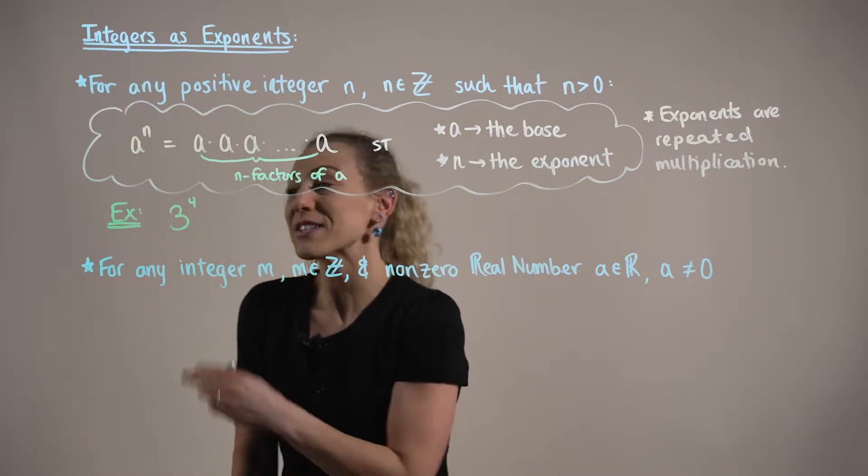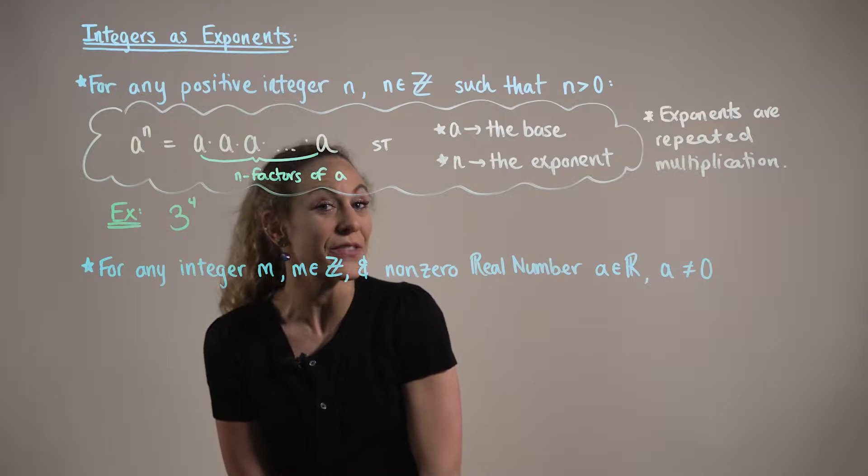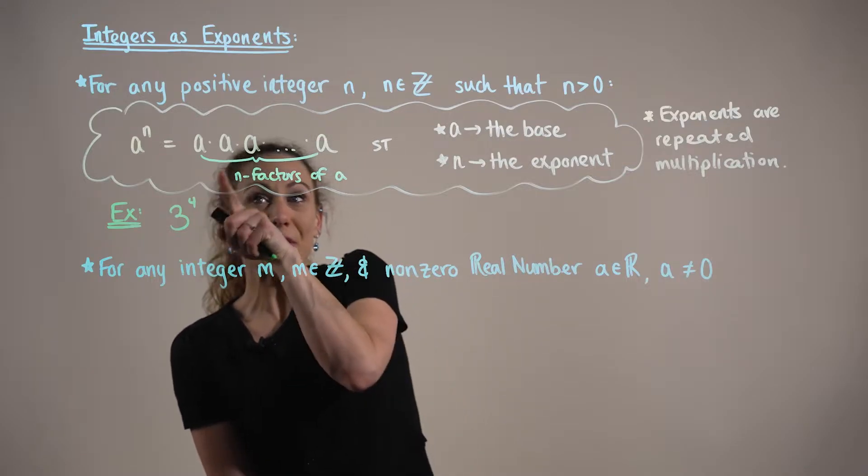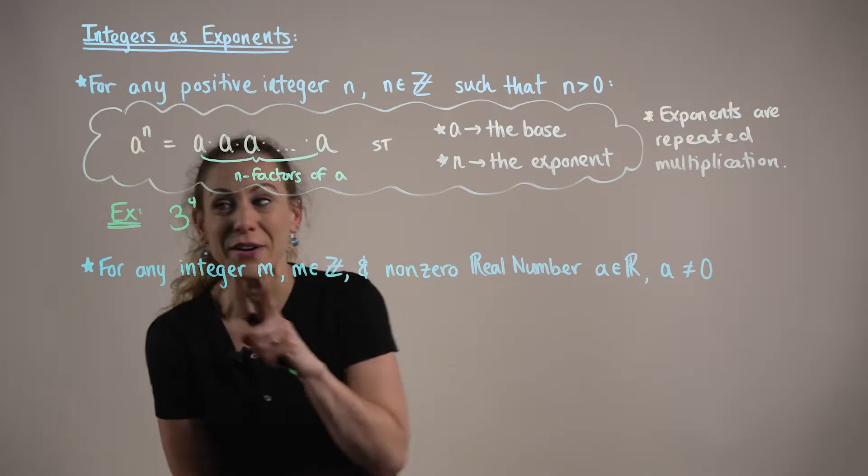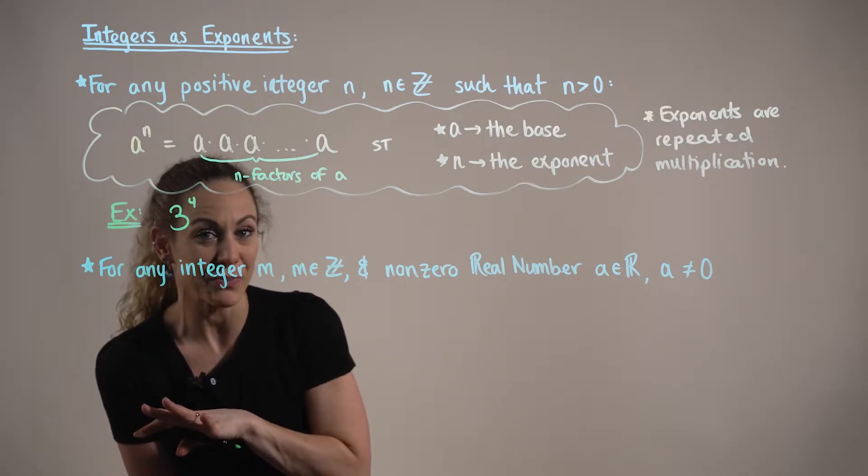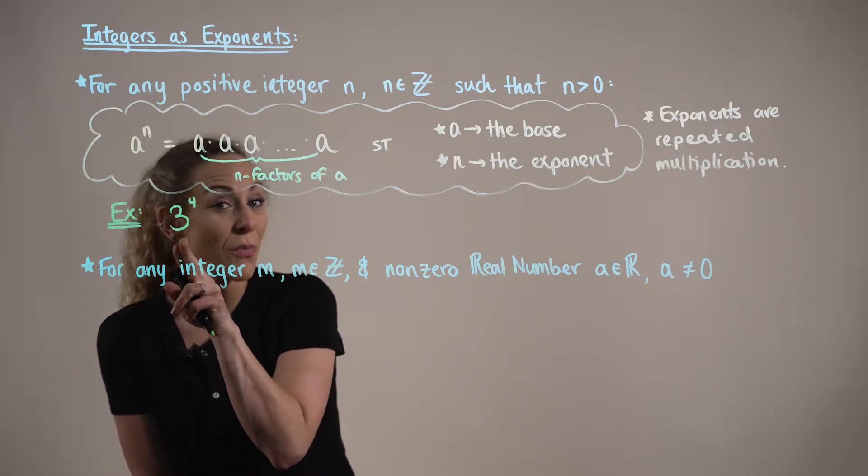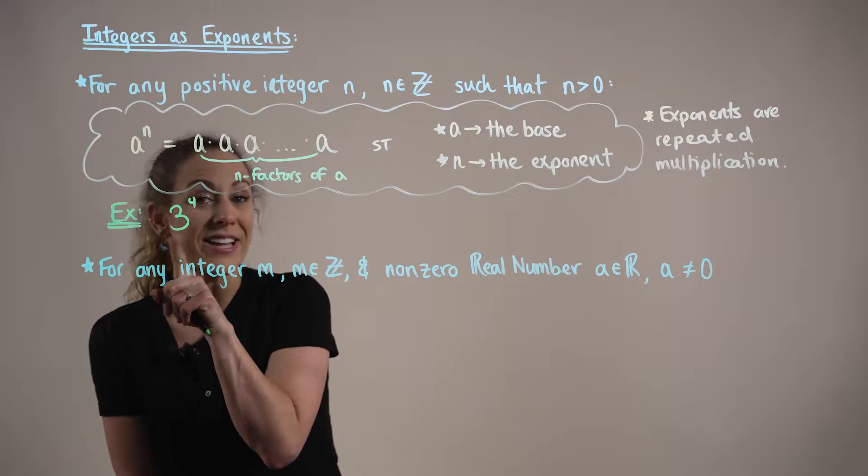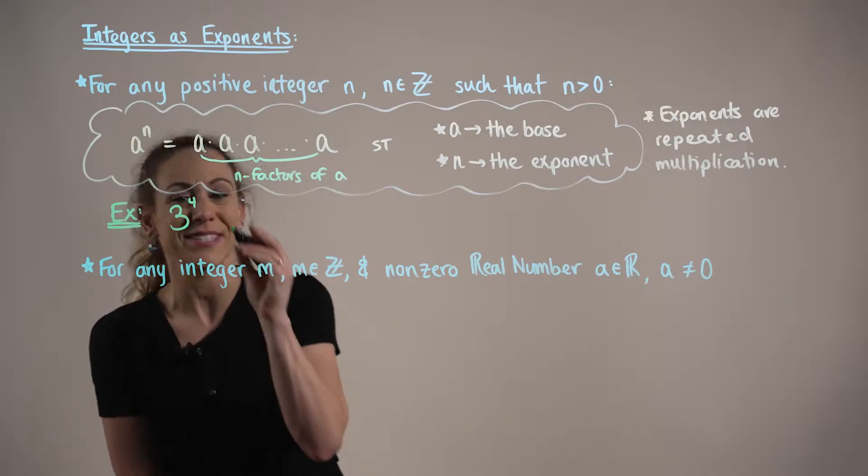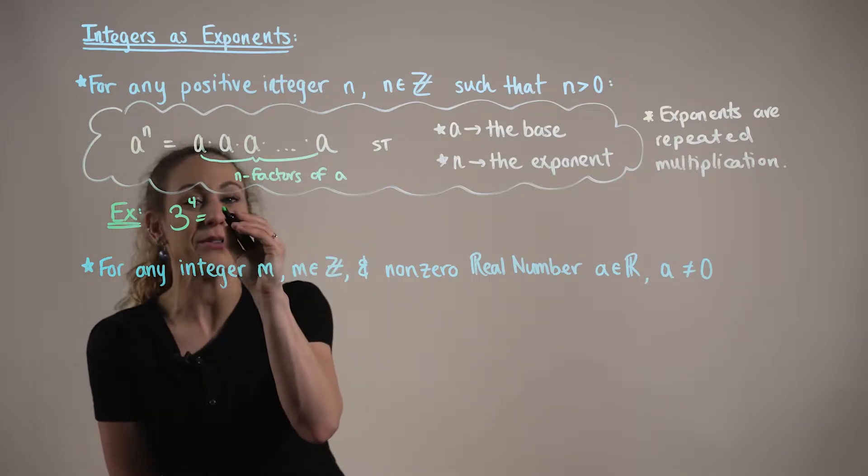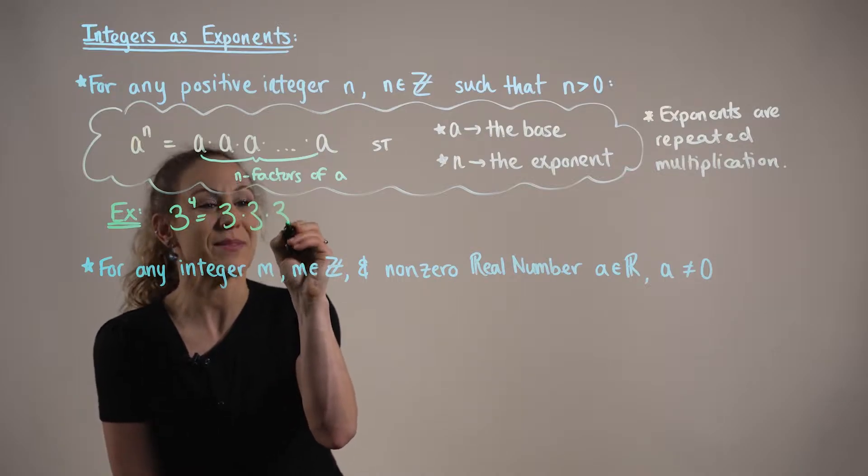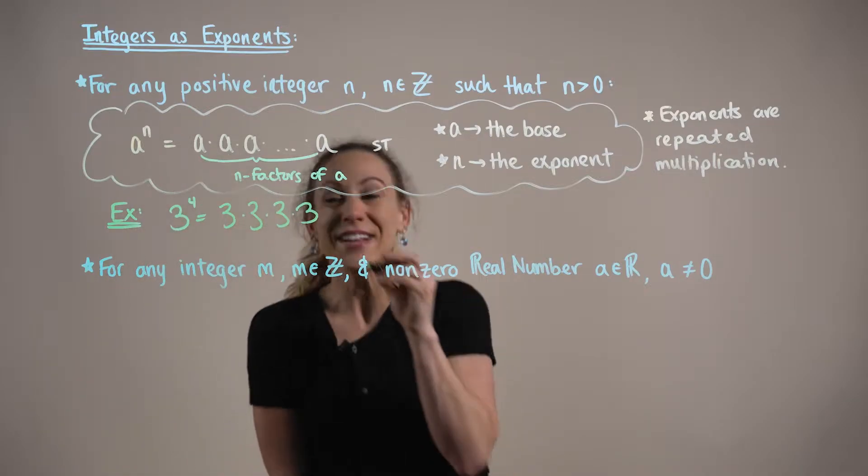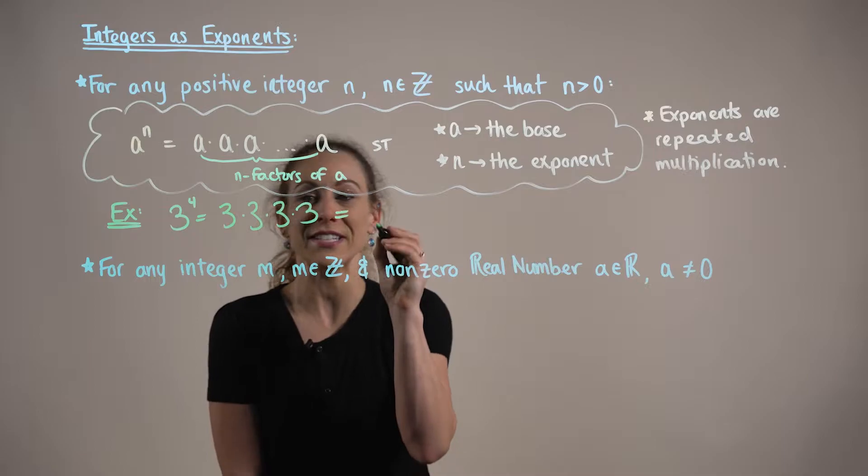Suppose we're asked to evaluate the expression three to the fourth. Thinking back to our definition, this is asking us to multiply the number three together four times. We can expand this out to three times three times three times three, leaving us with the final product of 81.